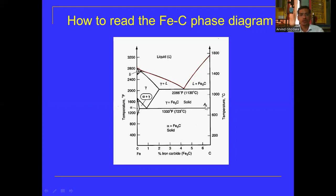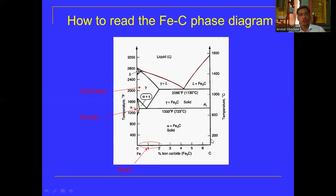At 727 or 723 degree Celsius — the A1 temperature — the phase present is alpha ferrite, which is soft and ductile in nature. At higher carbon percentages we get the cementite phase, which is brittle in nature. The A2 temperature line, the A3 temperature line, and the Acm temperature line are shown on the diagram. In the region between A3 and A1, the phase is alpha ferrite plus austenite.